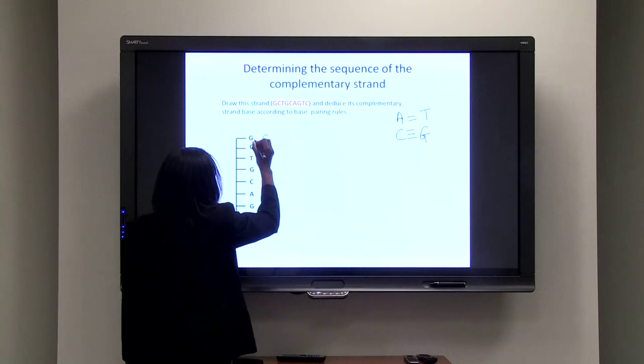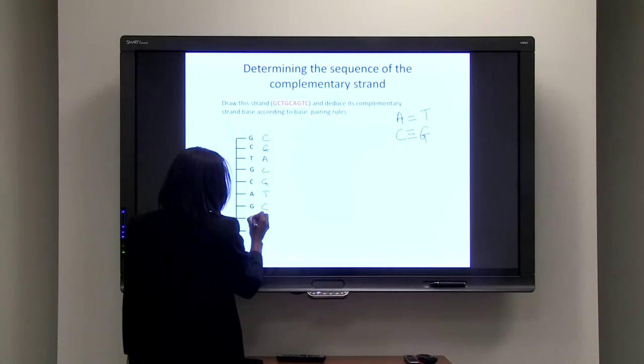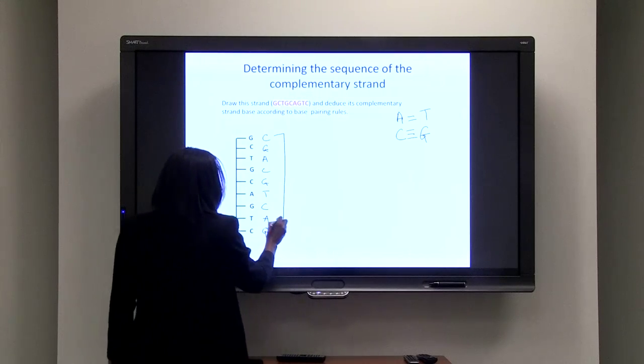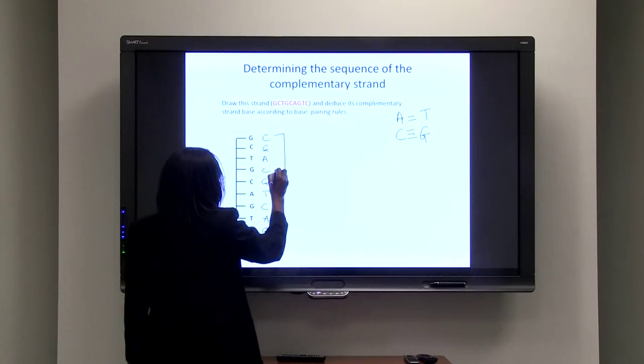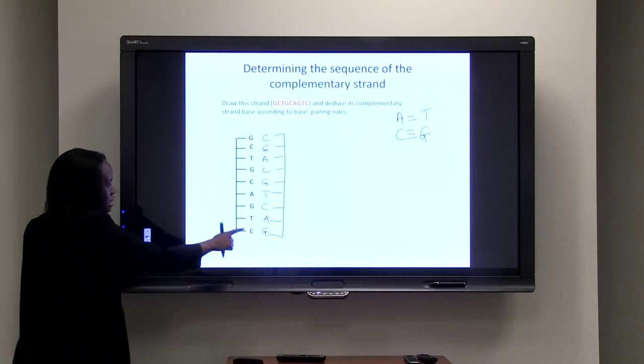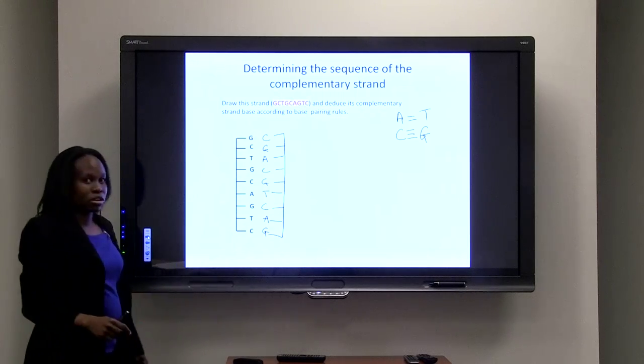So, the other strand would be C, G, A, C, G, T, C, A, and G. So, therefore, we can determine our complementary strand if we know our existing strand. So, this actually is the complete DNA molecule.